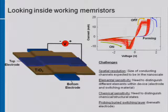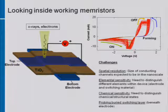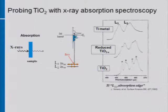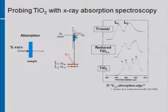My approach was to use focused x-rays and electrons. I'm performing x-ray absorption spectroscopy on our titanium dioxide layer. The experiment is simple: shine x-rays on the sample and measure absorption. For the titanium L-absorption edge in any transition metal oxide, the excitation takes a core-level electron and excites it to unfilled valence states.